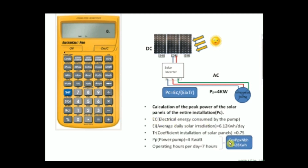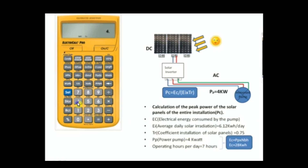First we have to find EC. The electrical energy equals the pump power multiplied by the operation hours per day. We click on Set, then Clear All to reset. Now we start the calculation: the pump power is 4 kilowatts.